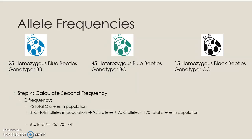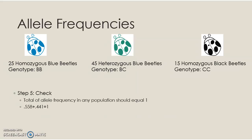We can double-check by adding the two allele frequencies together — they should equal one. In this case, 0.558 plus 0.441 equals 0.999, which is effectively one due to rounding at the third decimal point. If they added up to something like 0.8, you would have made an error somewhere. They should always add up to one — that's our way of double-checking. You've just calculated the allele frequencies for the original beetle population.